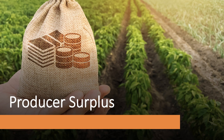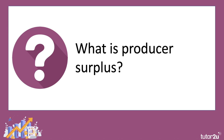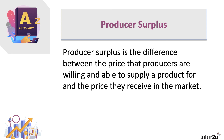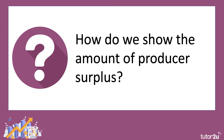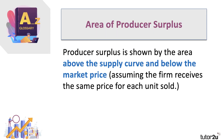Welcome to a short micro video looking at the concept of producer surplus. Producer surplus is defined as the difference between the market price that producers are getting in the market and the price that they would be willing and able to supply a product for. It's a measure of producer welfare, and we show the amount of producer surplus by the area above the supply curve.